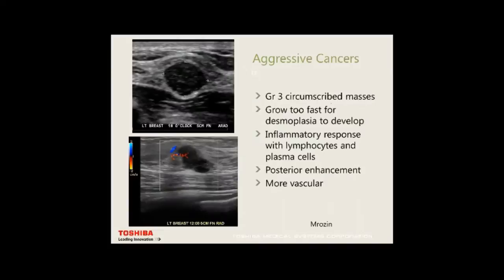The aggressive grade 3 cancers are unfortunately the more circumscribed masses. They don't have desmoplastic reaction because they grow too fast for desmoplasia to develop. This is an inflammatory response with lymphocytes and plasma cells; they tend to have posterior enhancement, mimicking benign lesions, and are more vascular. One lesion looked very much like a fibroadenoma until the probe tilt method showed it dragging tissue with it, and rotation revealed spiculated edges.